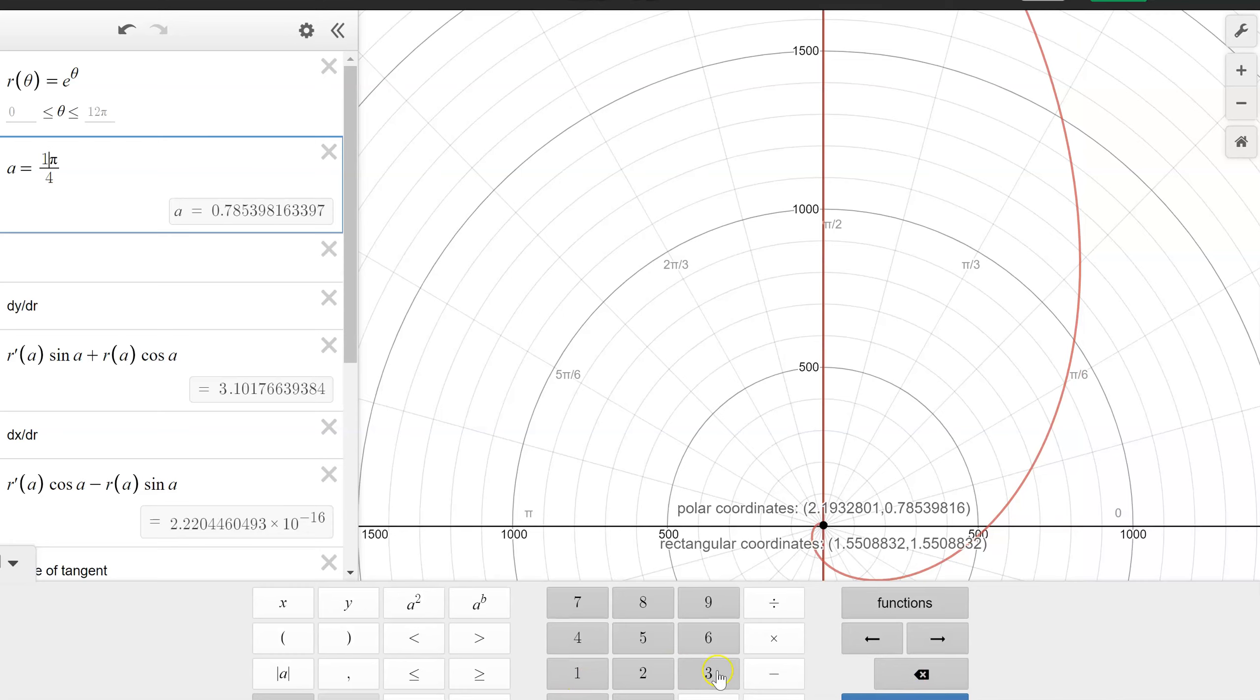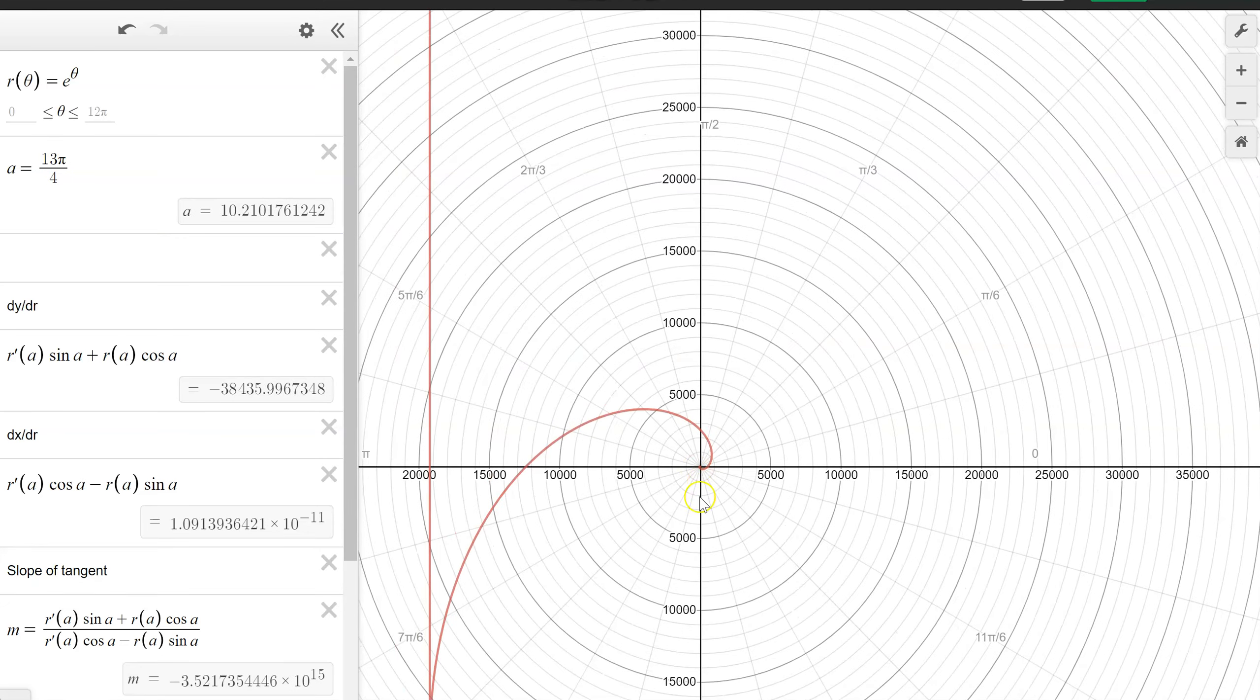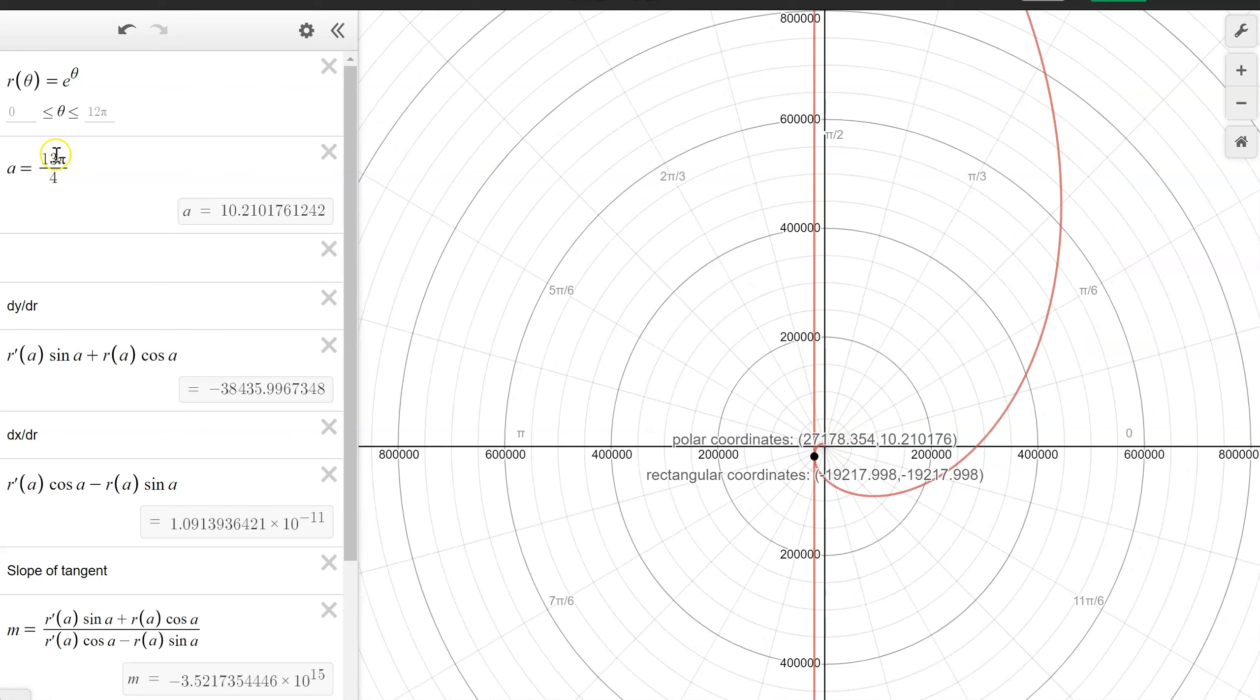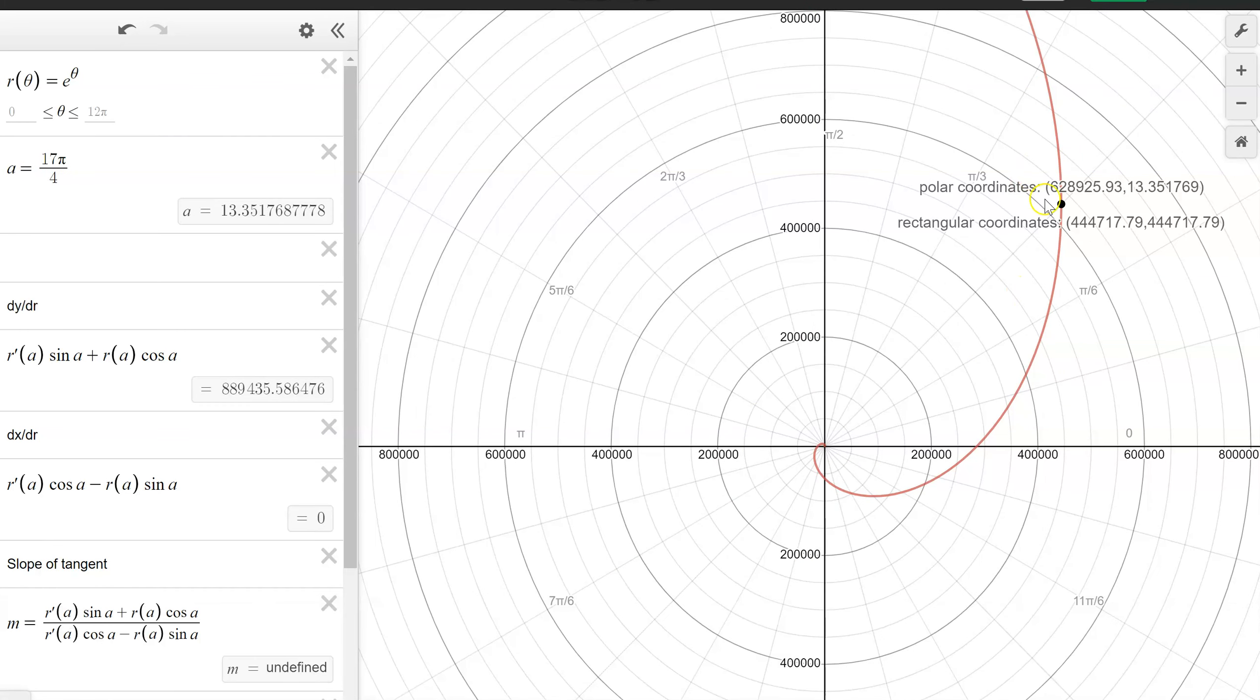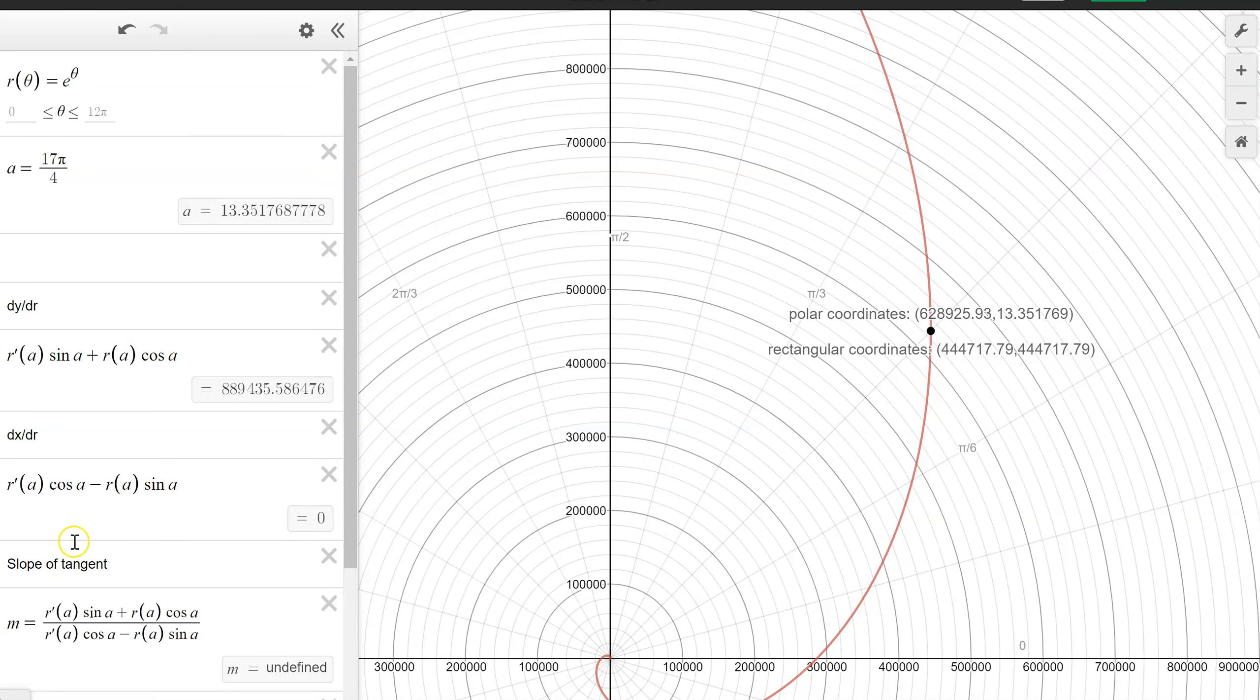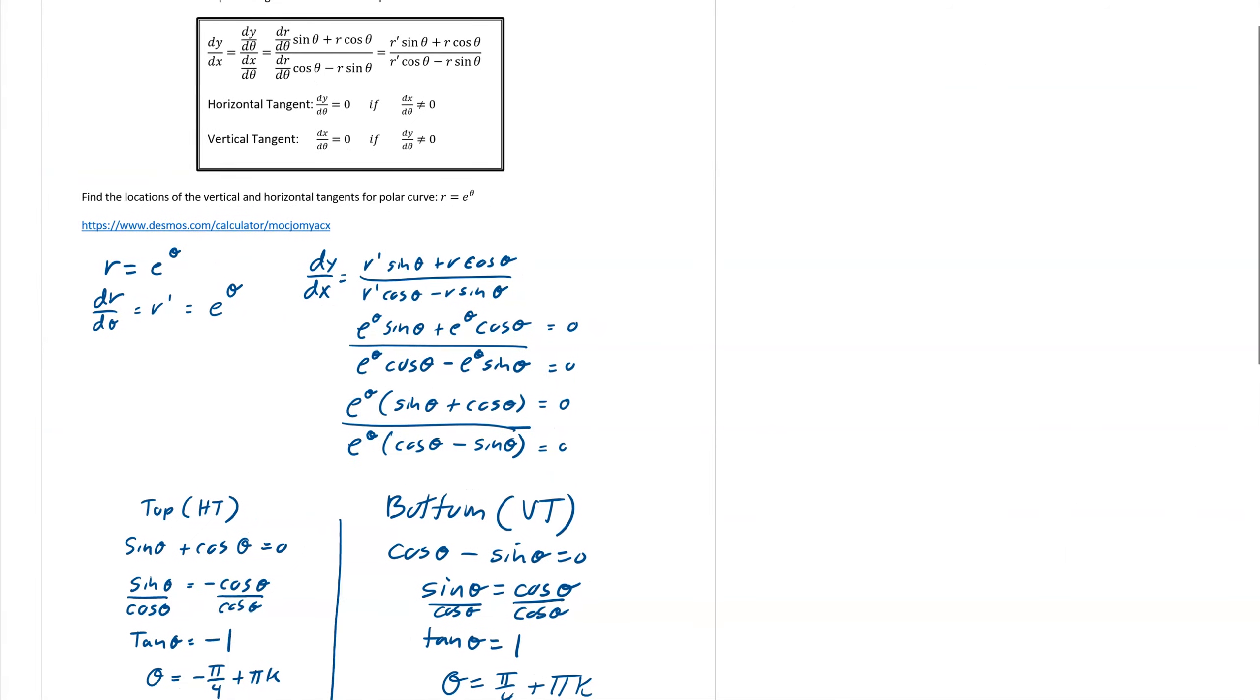So 9 would be 13. And it just keeps working. And so we would get the same thing. So that would be at 17. So our next vertical tangent. And you can do this with your graphing calculator as well.